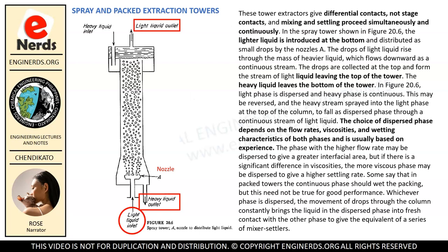Next in our list are the spray and packed extraction towers. These tower extractors give differential contacts, not stage contacts, and mixing and settling proceed simultaneously and continuously. In the spray tower shown in Figure 20.6, the lighter liquid is introduced at the bottom and distributed as small drops by nozzles. The drops of light liquid rise through the mass of heavier liquid, which flows downward as a continuous stream. The drops are collected at the top, while the heavy liquid leaves the bottom. In Figure 20.6, the light phase is dispersed and the heavy phase is continuous.